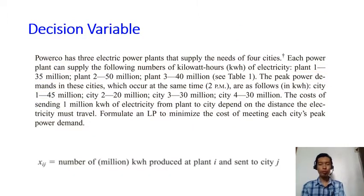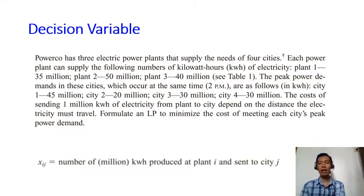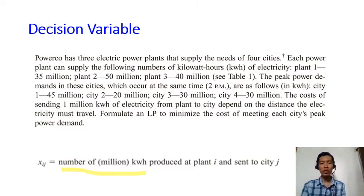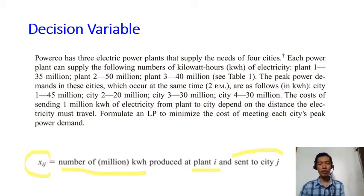When formulating a linear programming model, we need to think about the decision variables. We have three power plants and four cities that need electricity, so our decision is how many kilowatt-hours to produce at plant i and send to city j. We denote that as x_ij, representing the number of kilowatt-hours produced at plant i and sent to city j.